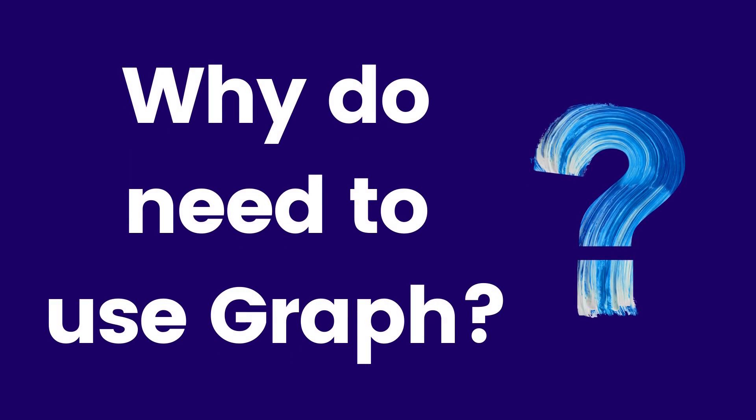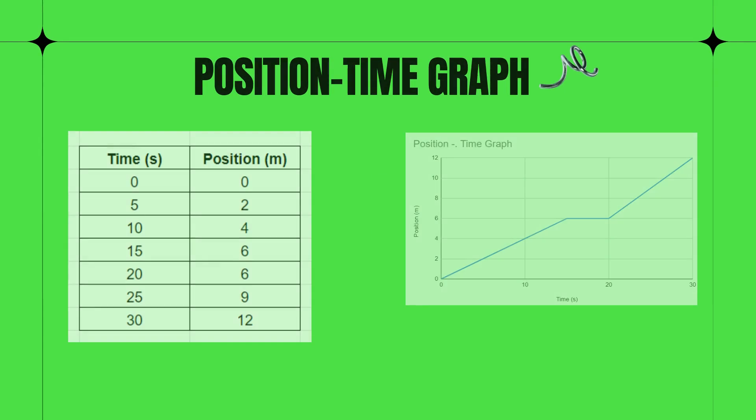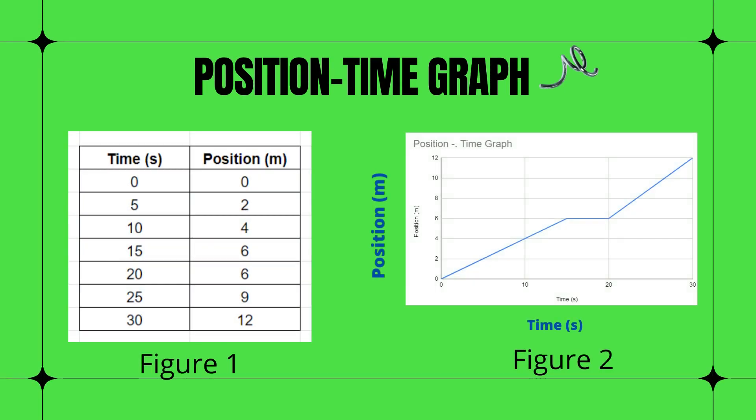Before we proceed, we need to know the advantages of using graphs in presenting data or information. Data can be presented in table form as shown in figure one, but graph is another way of presenting information. It can be used to show an underlying relationship between physical quantities such as position and time.